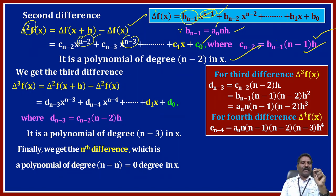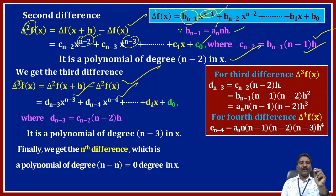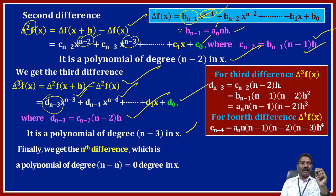Similarly, the third difference del cubed f of x equals del squared f(x+h) minus del squared f(x). Taking another constant d_(n-3), del cubed f of x is d_(n-3) · x^(n-3) plus d_(n-4) · x^(n-4) plus and so on, d_1 · x plus d_0, where d_(n-3) equals c_(n-2) · (n-2) · h. It is a polynomial of degree n minus 3 in x.